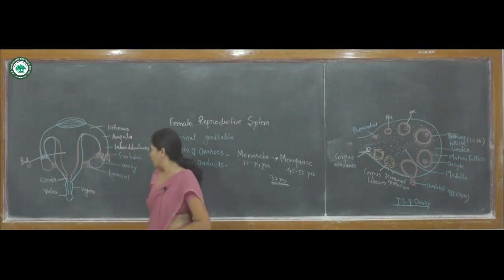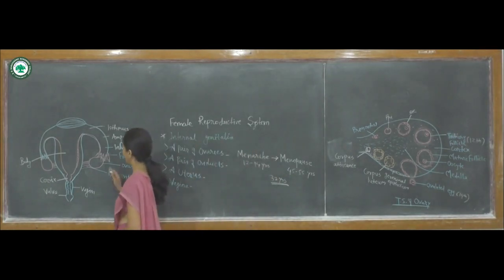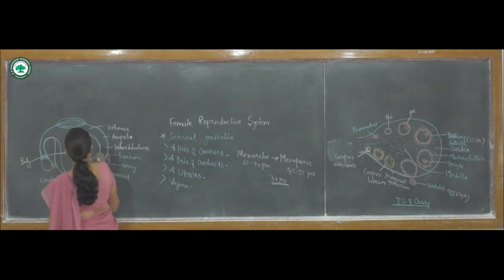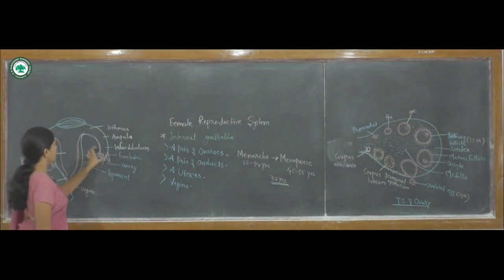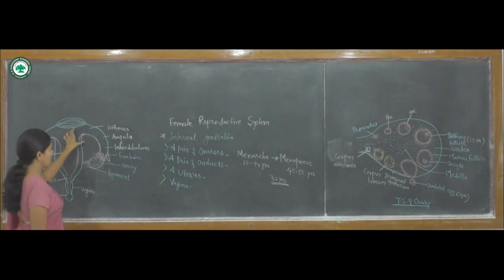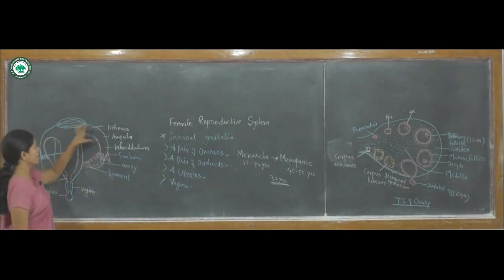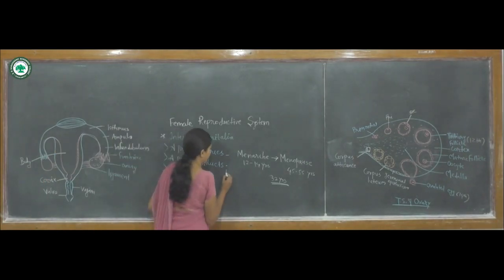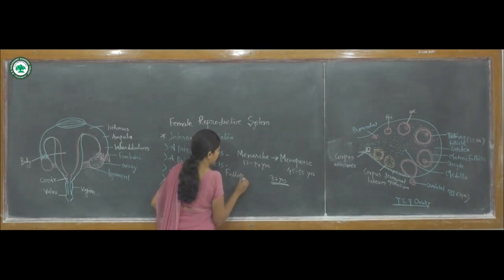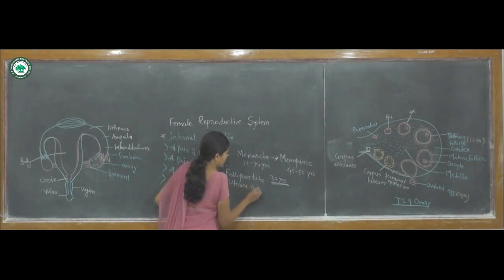Next, adjacent to the pair of ovaries, there is a pair of oviducts. The ovaries are connected to a long tube-like structure leading to the uterus. This long tube-like structure is known as the oviduct. Oviducts are also in pairs, with two oviducts on both sides of the uterus. The oviduct is also known as the fallopian tube.